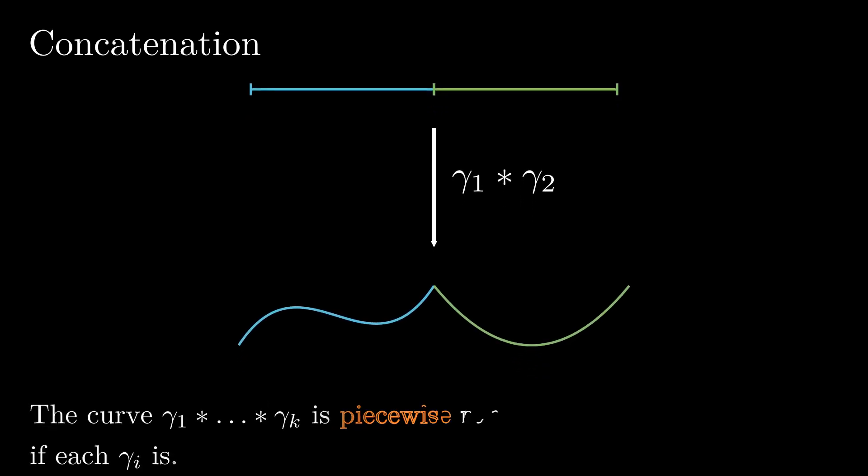When both gamma1 and gamma2 are smooth, we say that the concatenation is piecewise smooth. Same for C^k and regular.